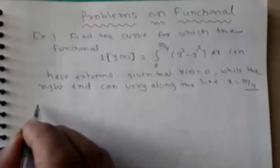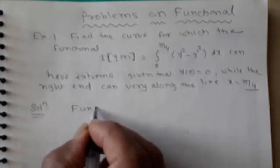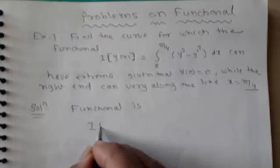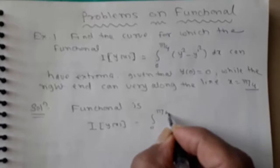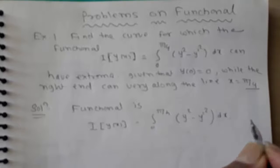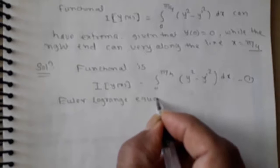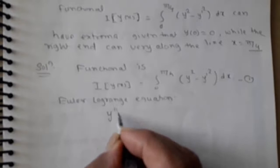The functional is given by I[y(x)] = integral from 0 to π/4 of (y² minus y'²) dx. For this functional, the Euler-Lagrange equation becomes y'' + y = 0.